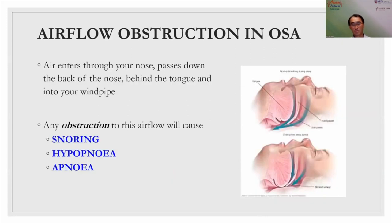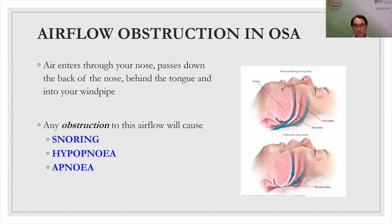When you sleep, air enters through your nose or mouth, passes to the back of your nose, down through your soft palate, behind your tongue, and down through your vocal cords to your windpipe or trachea. Any obstruction to this airflow can lead to snoring, where air squeezes through a narrow space causing surrounding soft tissue to vibrate. Hypopnea is where breathing is reduced, while apnea is a complete obstruction where you stop breathing entirely for at least 10 seconds.